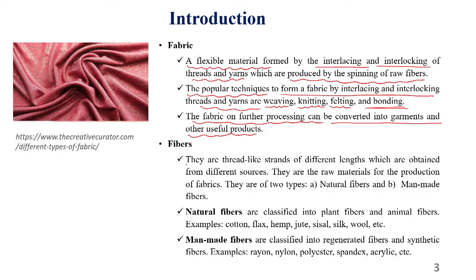Fibers are thread-like strands of different lengths obtained from different sources, and these sources are natural fibers or manmade fibers. As far as natural fibers are concerned, we can get them from plants or from animals. Some examples are cotton, flax, hemp, jute, sea cell, silk, and wool.